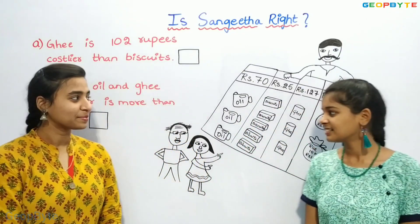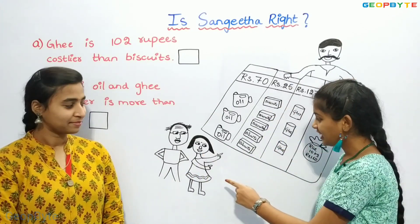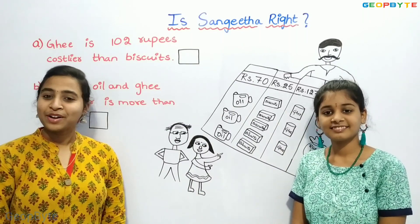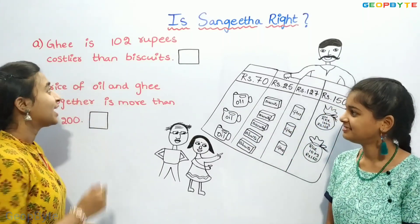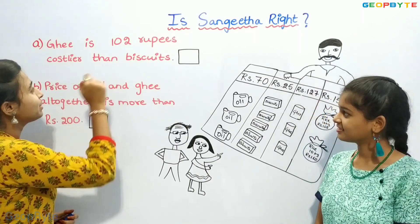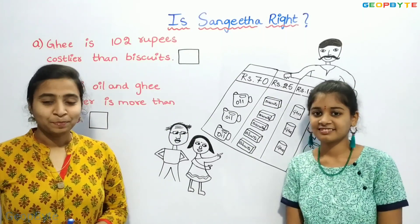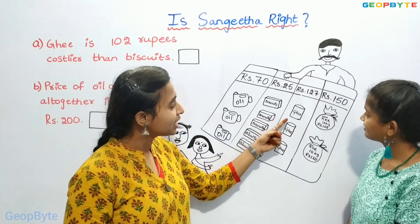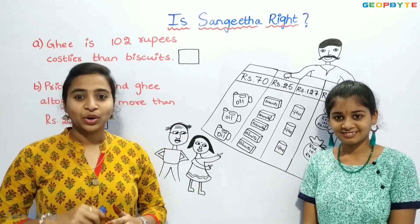Hey kids. One day, Sangeeta went to the market with her grandpa. She saw the prices and said to her grandpa. Let us see them one by one and check whether Sangeeta is right or wrong. First, let us see part A. We have: Ghee is 102 rupees costlier than biscuits. Sangeeta said that Ghee is 102 rupees costlier than biscuits. Children, what is the cost of biscuits? 25 rupees. And what is the cost of Ghee? 127 rupees. To find whether the cost of Ghee is 102 rupees more, we need to subtract 127 and 25.